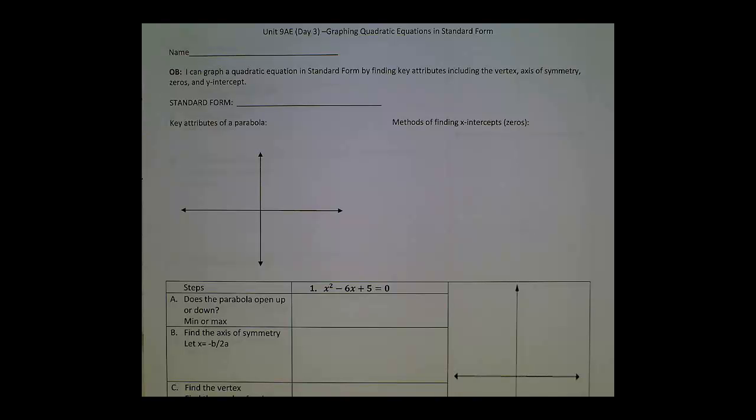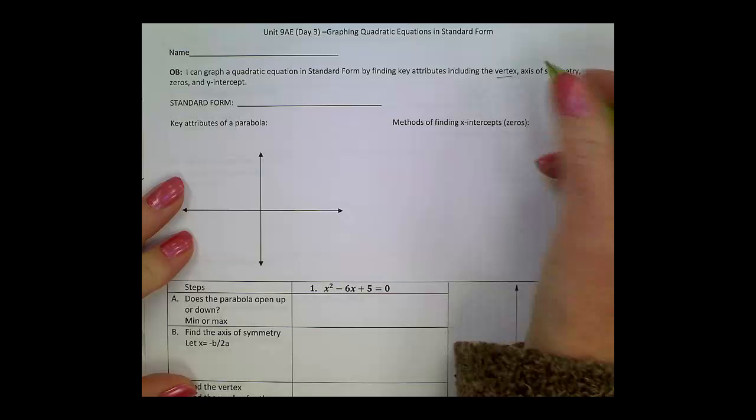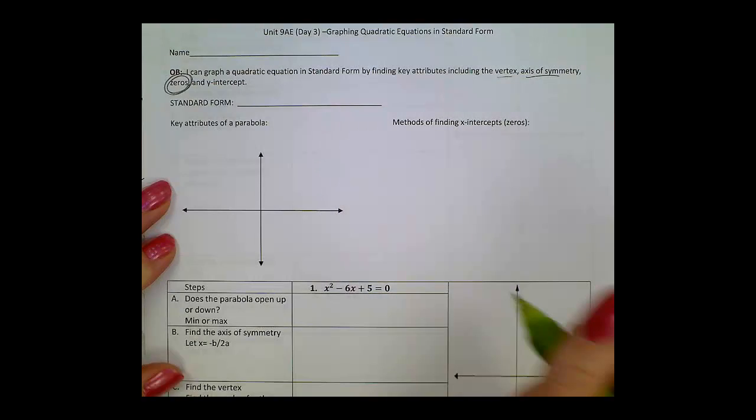Okay, algebra students, we are still graphing equations in standard form by finding key attributes: vertex, axis of symmetry, and today something new - we're going to bring in the zeros and the y-intercept.